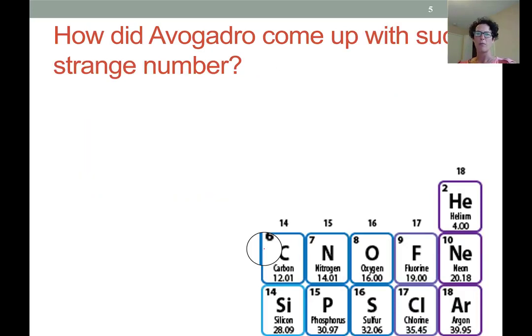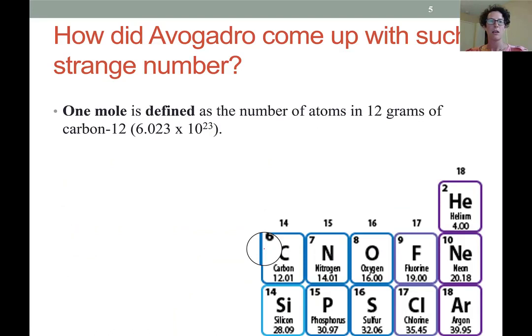So how did Avogadro come up with such a strange number? Well, 6.022 times 10 to the 23 is a really strange number, and it's not because he wanted to make your life difficult. It's actually because he wanted to have a simple clean way of describing amounts, and so his definition is based on the amount of carbon-12 that would have a mass of 12 grams.